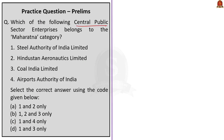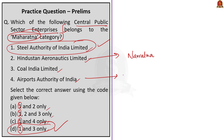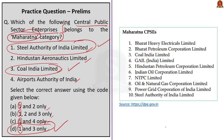Third question: Which of the following Central Public Sector Enterprises belongs to the Maharatna category? 1. Steel Authority of India Ltd. 2. Hindustan Aeronautics Ltd. 3. Coal India Ltd. 4. Airports Authority of India. Option A: 1 and 2 only. Option B: 1, 2 and 3 only. Option C: 1 and 4 only. Option D: 1 and 3 only. The answer is Option D, 1 and 3 only. Hindustan Aeronautics Ltd. is a Navratna CPSE and Airports Authority of India is a Mini Ratna Category 1 CPSE. Only Steel Authority of India Ltd. and Coal India Ltd. are Maharatna category companies.